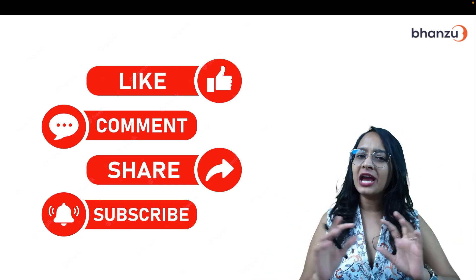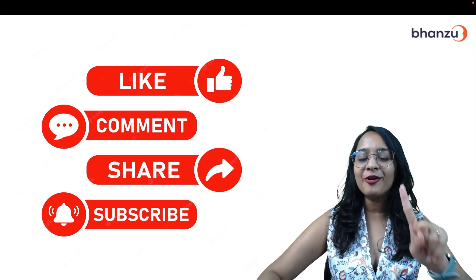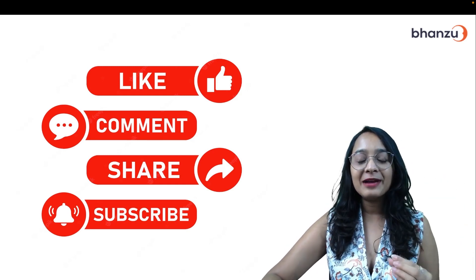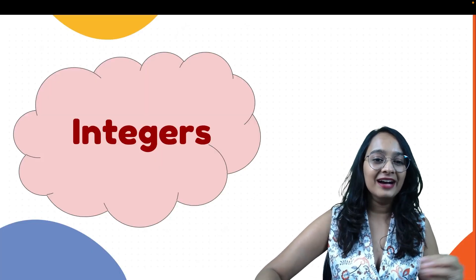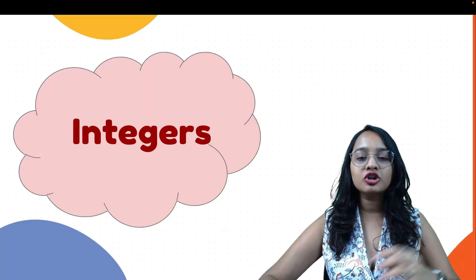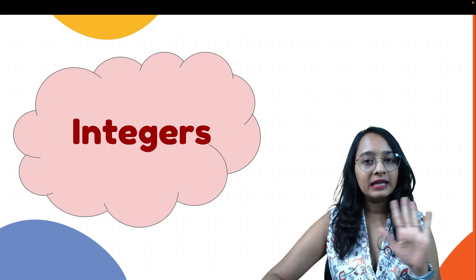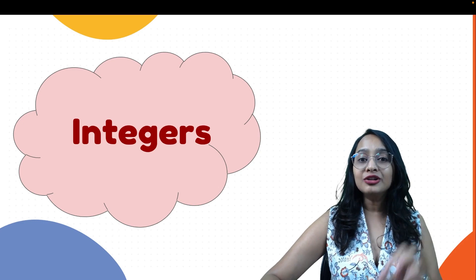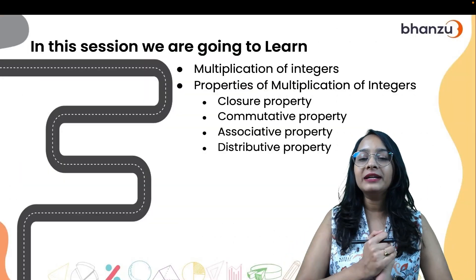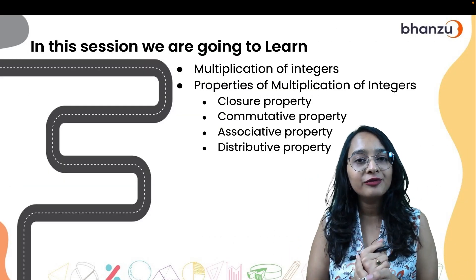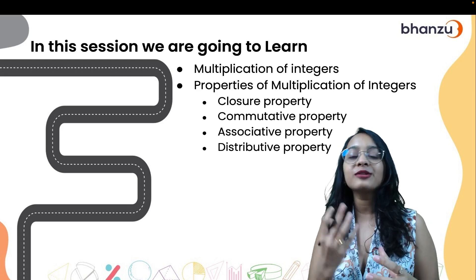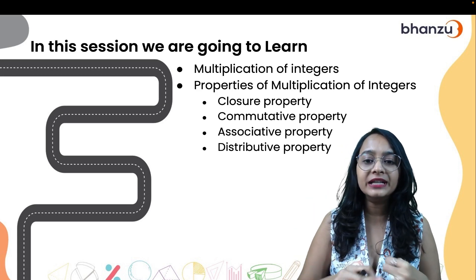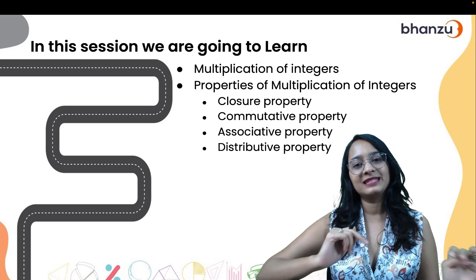Share this video with at least one friend — your bestie, BFF, close friends — and ask them to subscribe as well. Today's topic is integers. Part one's link is in the description box; go watch that. Today in part two we will be discussing the multiplication of integers and the properties of multiplication of integers: closure, commutative, associative, and distributive.